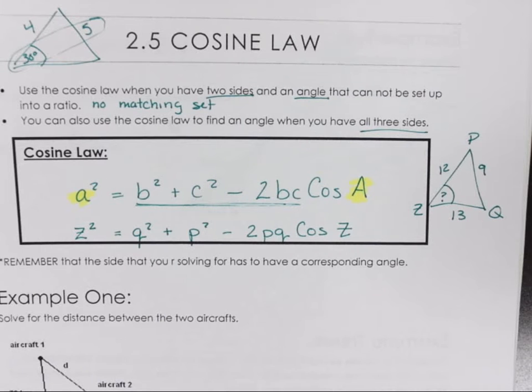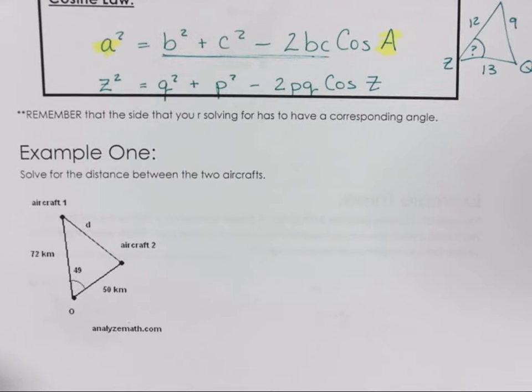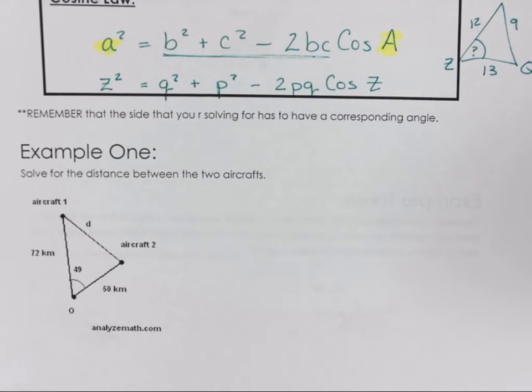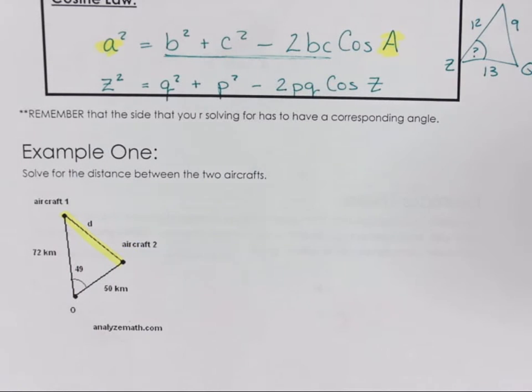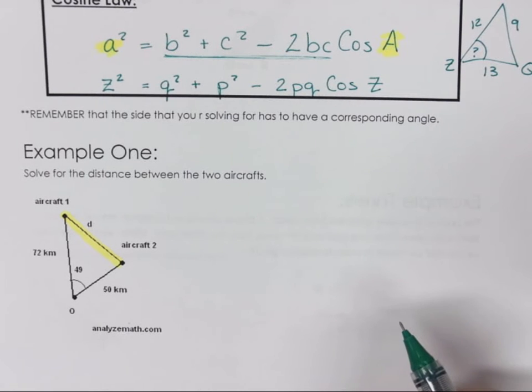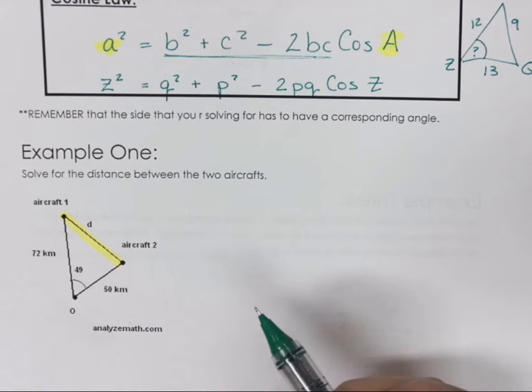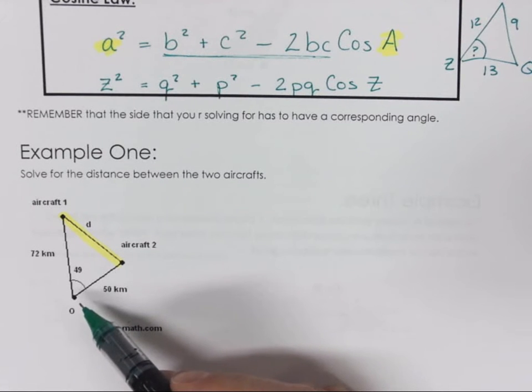What do all interior angles of a triangle add up to? 180. This question is asking for the distance between the two aircrafts. I'm trying to find that distance here. I'm going to solve for a side first.